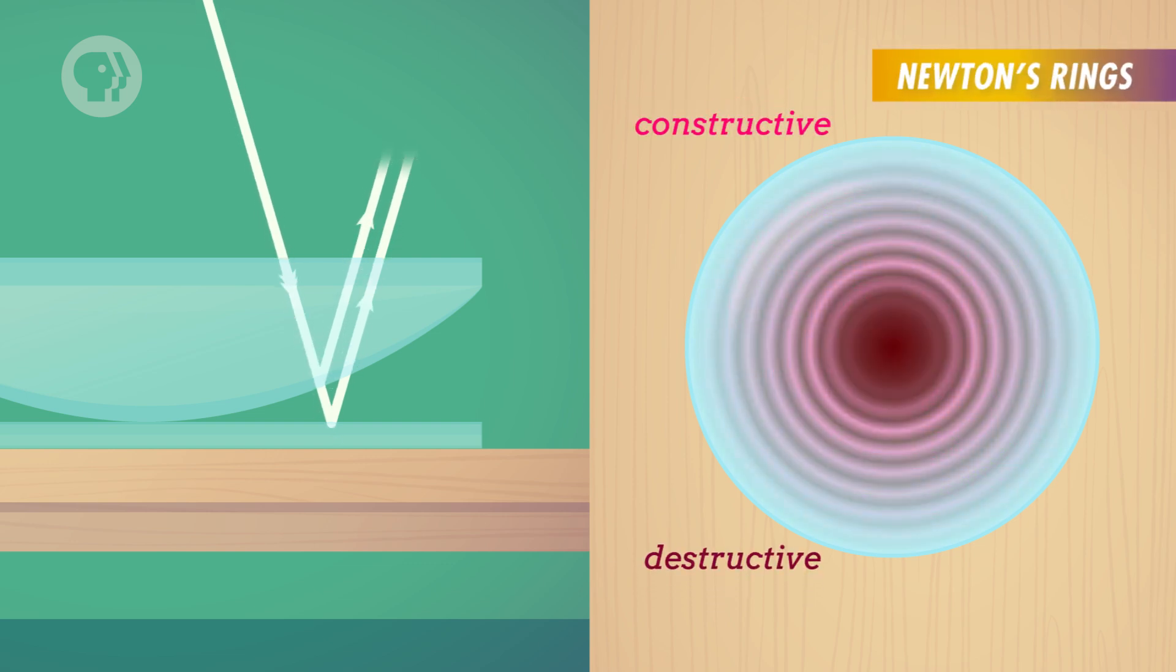These circles are known as Newton's rings, and if the light source is monochromatic, the rings simply alternate light and dark, displaying alternating constructive and destructive interference. Now, if you look at the very center of Newton's rings, where the glass plate is in contact with the lens, you'll notice a dark spot.